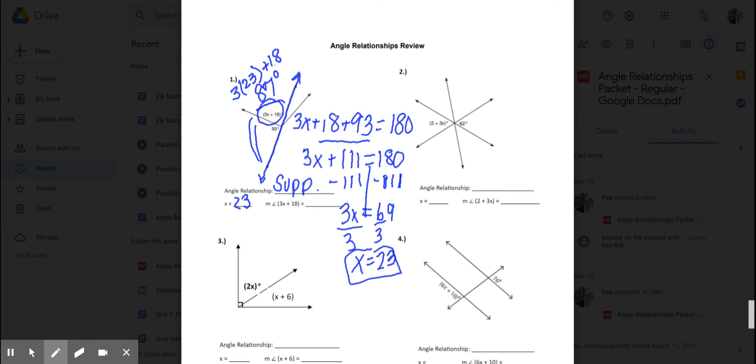Now, 87 degrees isn't really anywhere on here. But here's what I know. If 87 plus 93 equals 180, then I have the right answer. And I do. So, there you go. That means this angle is 87 degrees. So, there's example 1.